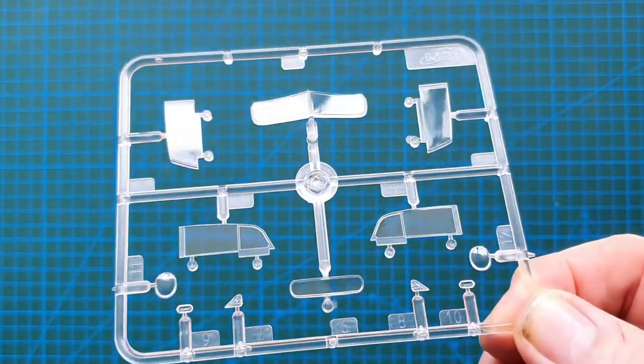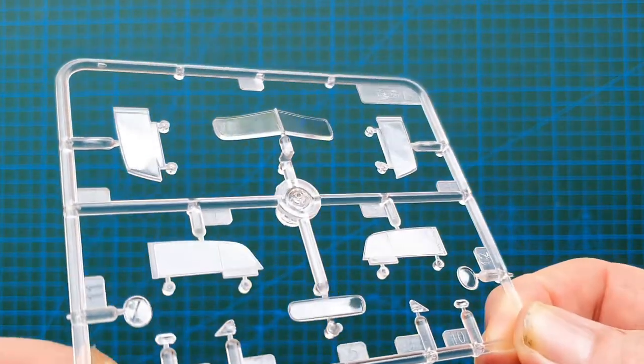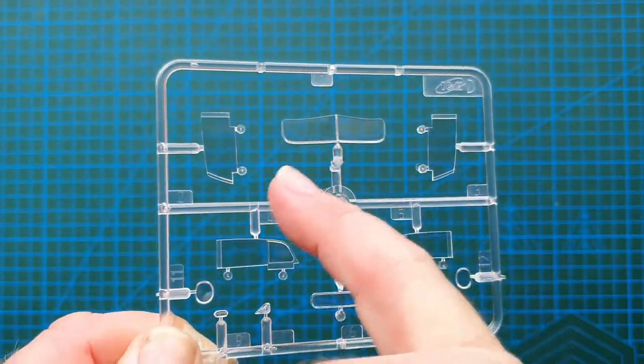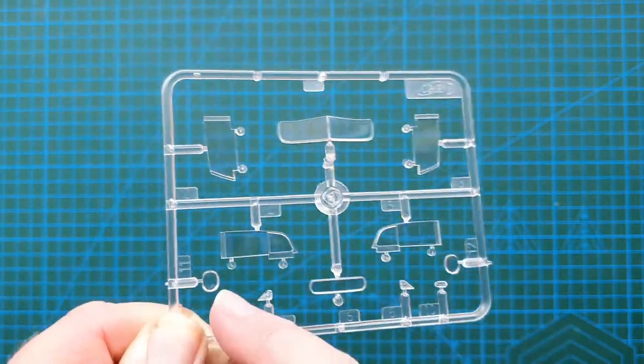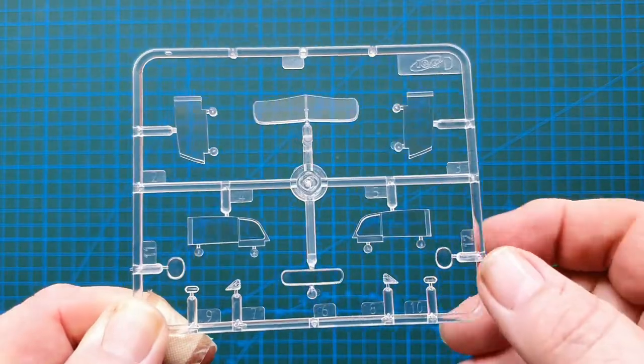Okay, so let's have a look at the sprues. I think first we will have a look at the important one, the clears. So windscreen, side windows, back window, headlights. That's what you get.